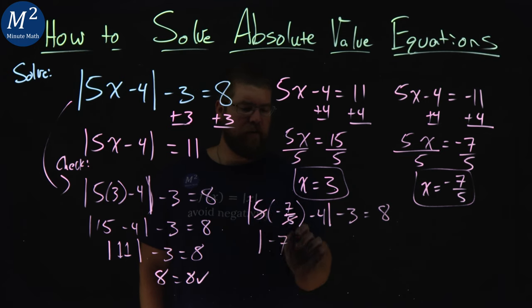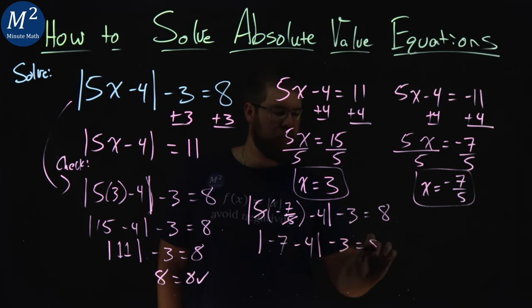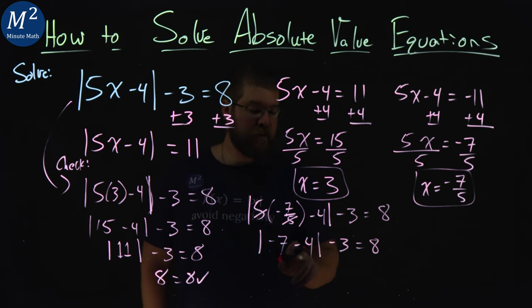So we have a negative 7 left over, minus 4 inside the absolute value, minus 3 equals an 8. Negative 7 minus 4 gives us that negative 11 here, minus 3.